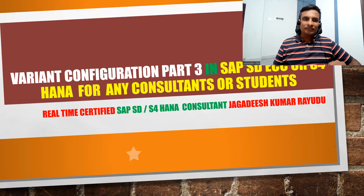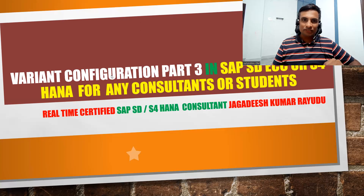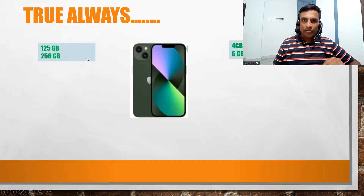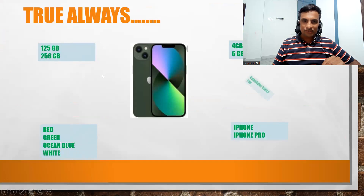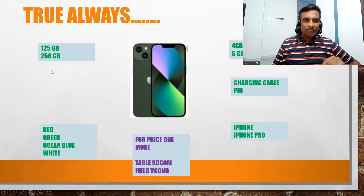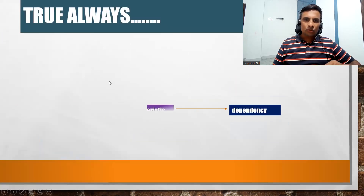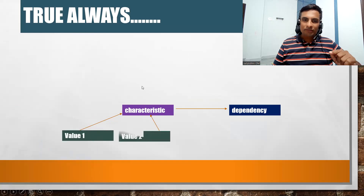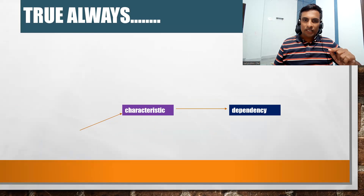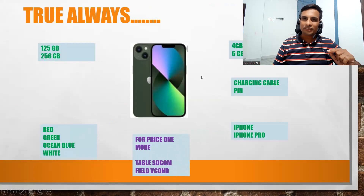Welcome back. This is part three of variant configuration. Let's not waste time and get into the practicals. For phone we have to define all these characteristics. First we'll define iphone_color. Technically, this is the place where we are trying to define different values — value one, value two, till value N. These are the different characteristics for the phone. Let's get into this and I will show you the path.